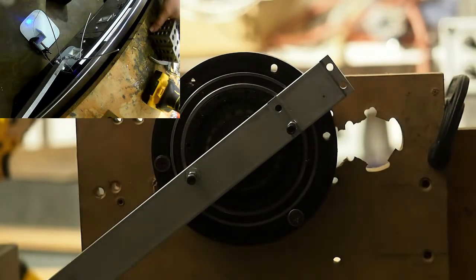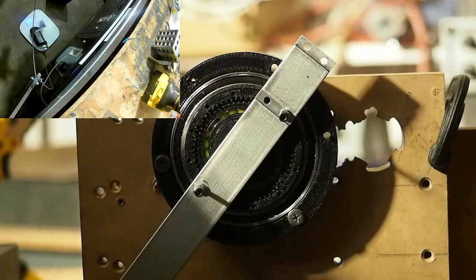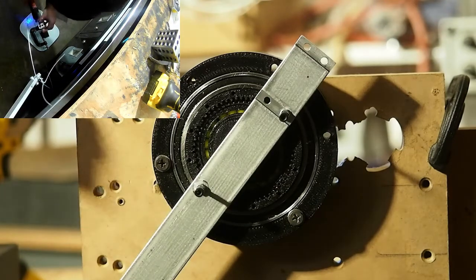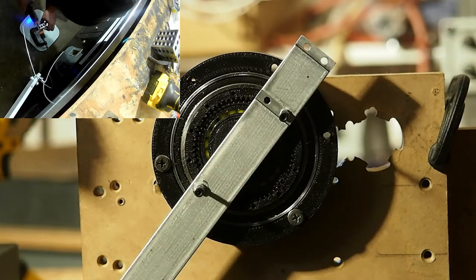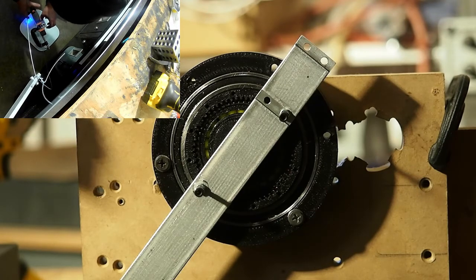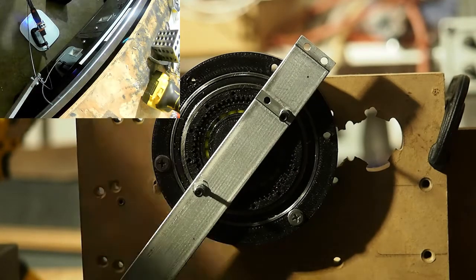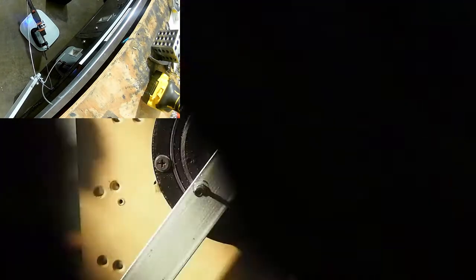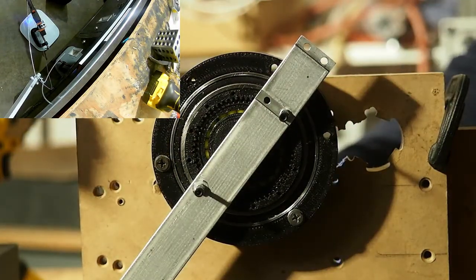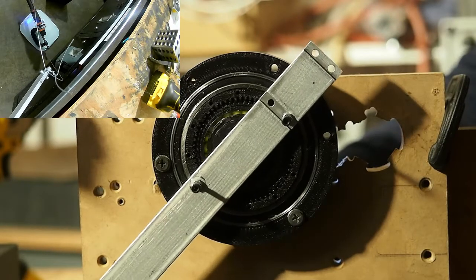We'll go ahead and add whatever this is going to be. Nice and off balance. Alright, so we've doubled the weight, so it's 2,000 grams. Test number two.